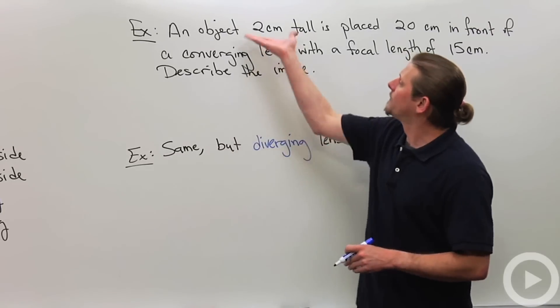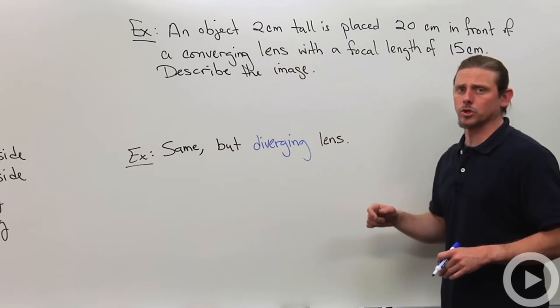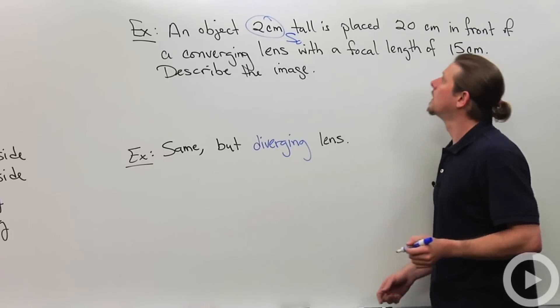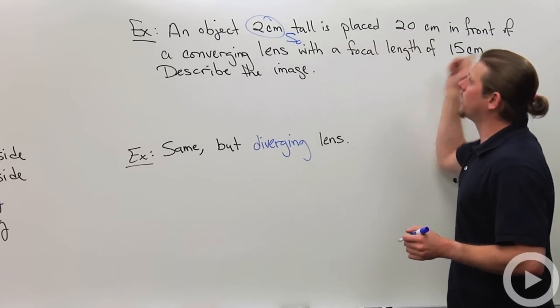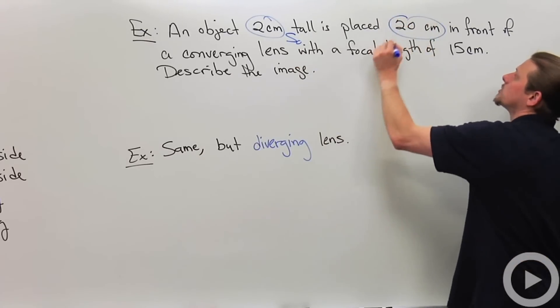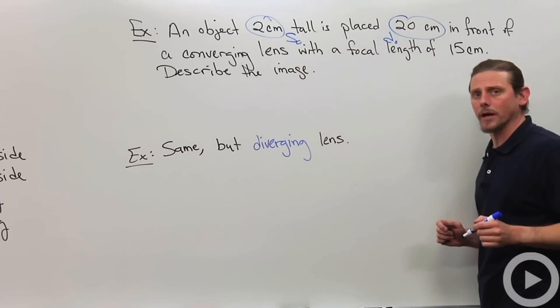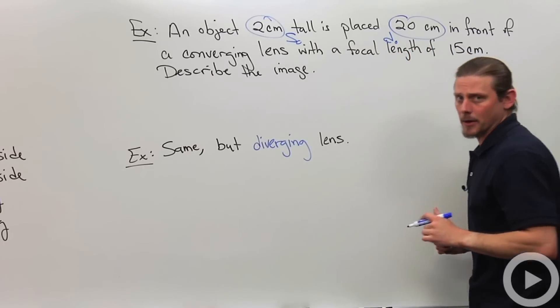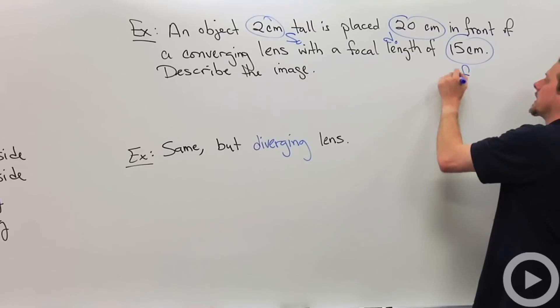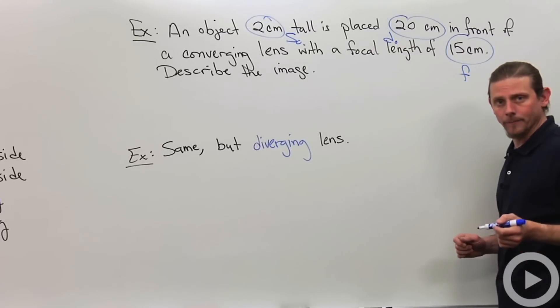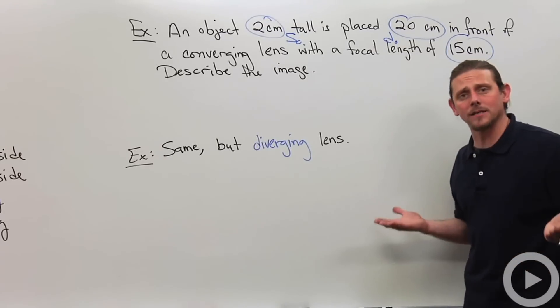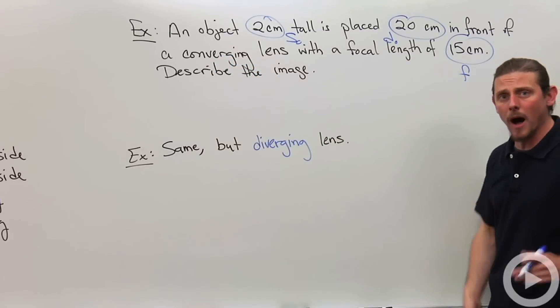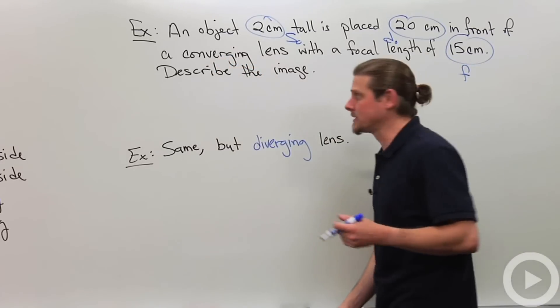Over here, I've got an object that's two centimeters tall. So this is the size of the object, and it's placed 20 centimeters in front of a converging lens. So this is going to be my distance of the object with a focal length of 15 centimeters. So this is going to be my F. Now am I going to take it as positive or negative? Well, it's a converging lens, and so that means that my focus should be positive.